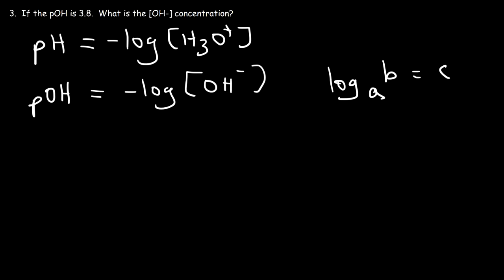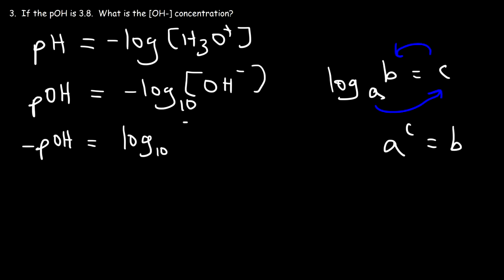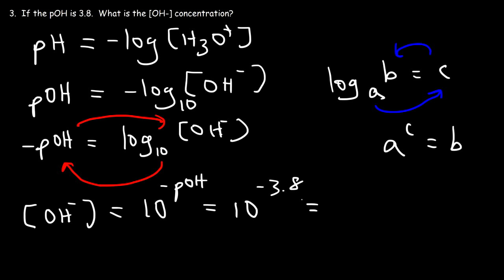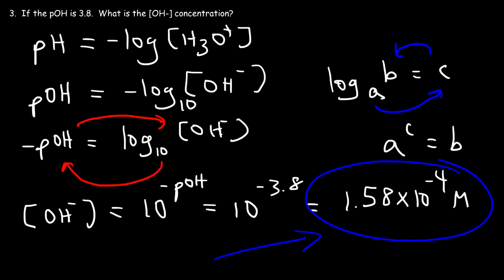Since the base of a common log is 10, we move the negative sign to get: negative pOH equals log base 10 of the hydroxide concentration. Therefore, 10 raised to the negative pOH equals the hydroxide concentration. This is the formula to add to your list. So it's 10 raised to the negative 3.8, which comes out to be 1.58 times 10 to the minus 4 moles per liter. That's how you calculate the hydroxide concentration given the pOH.